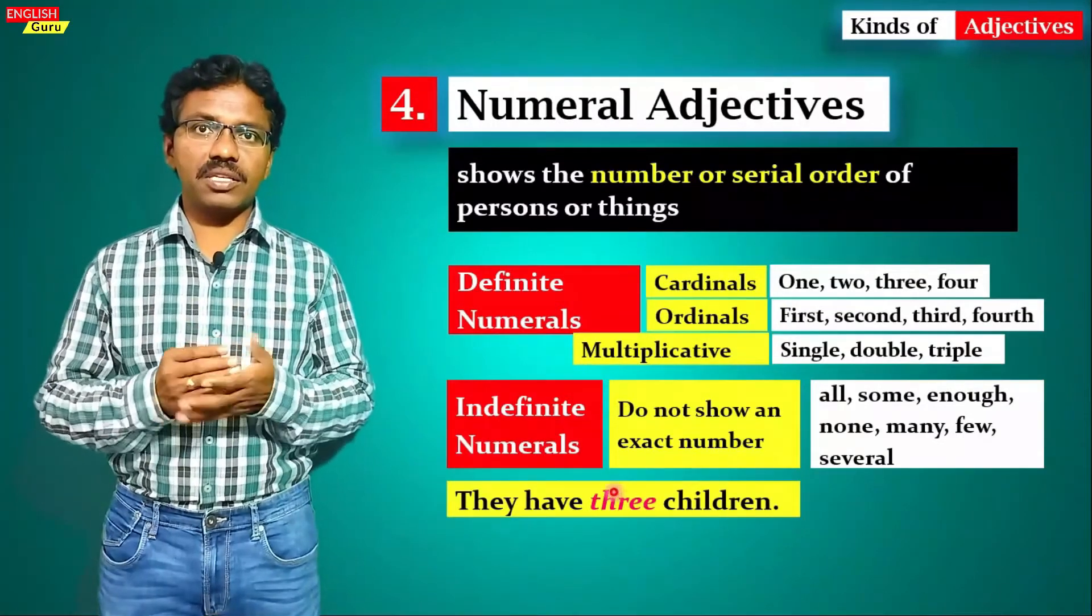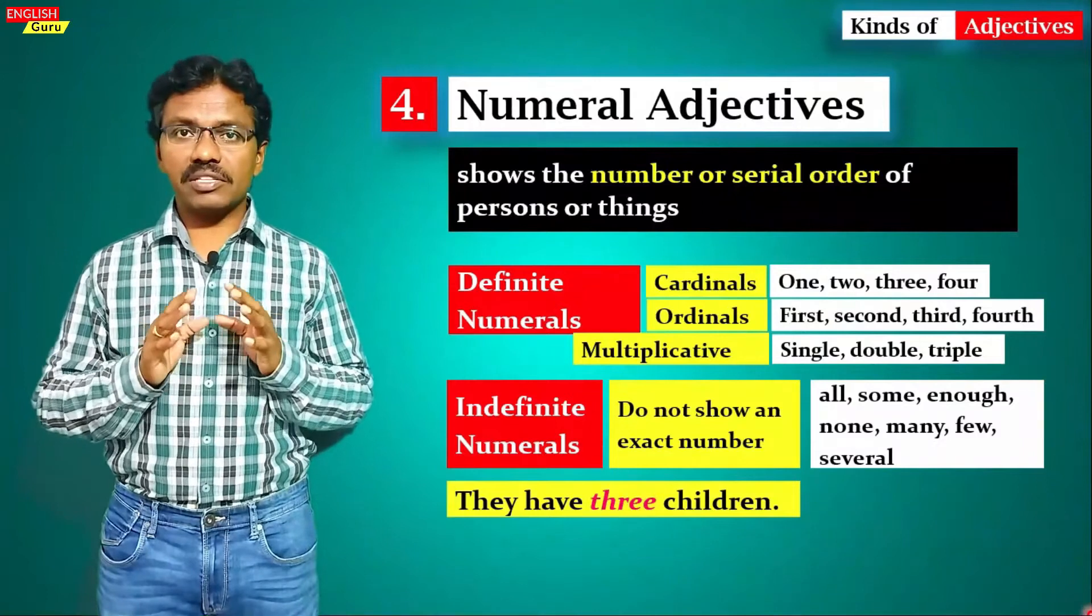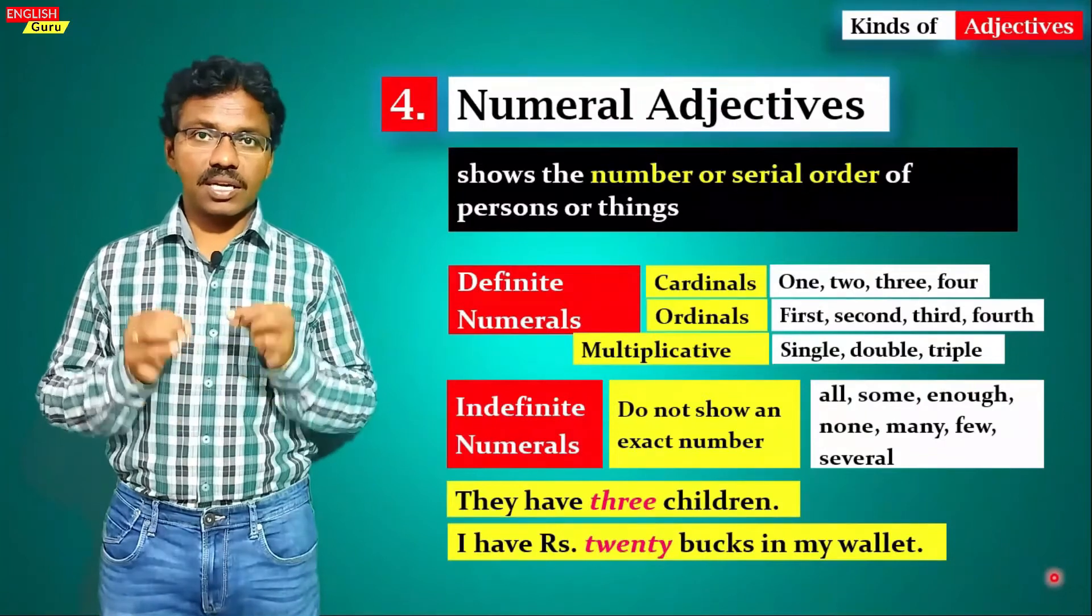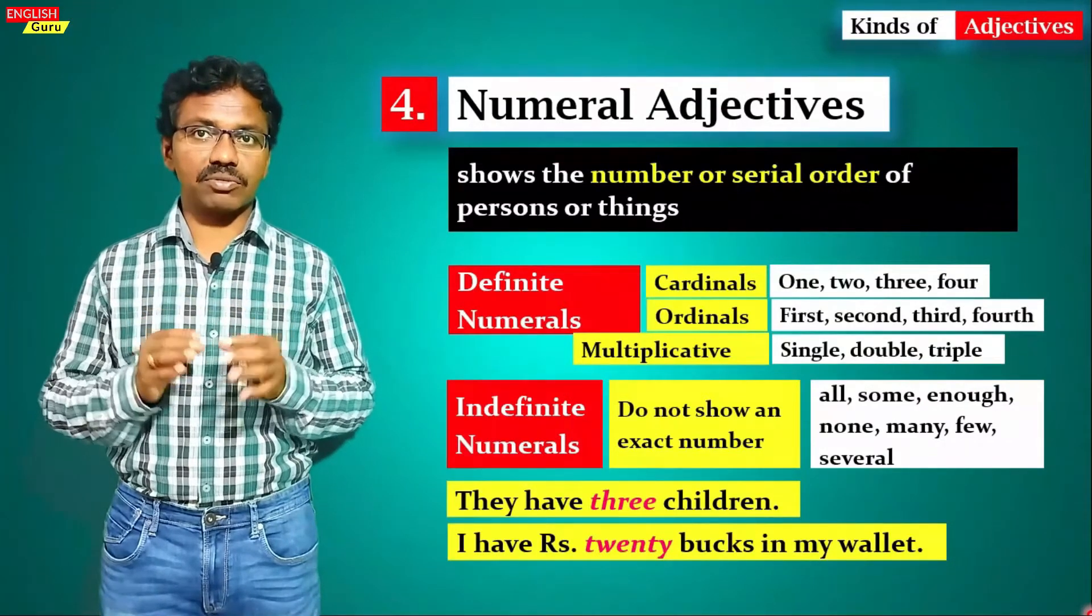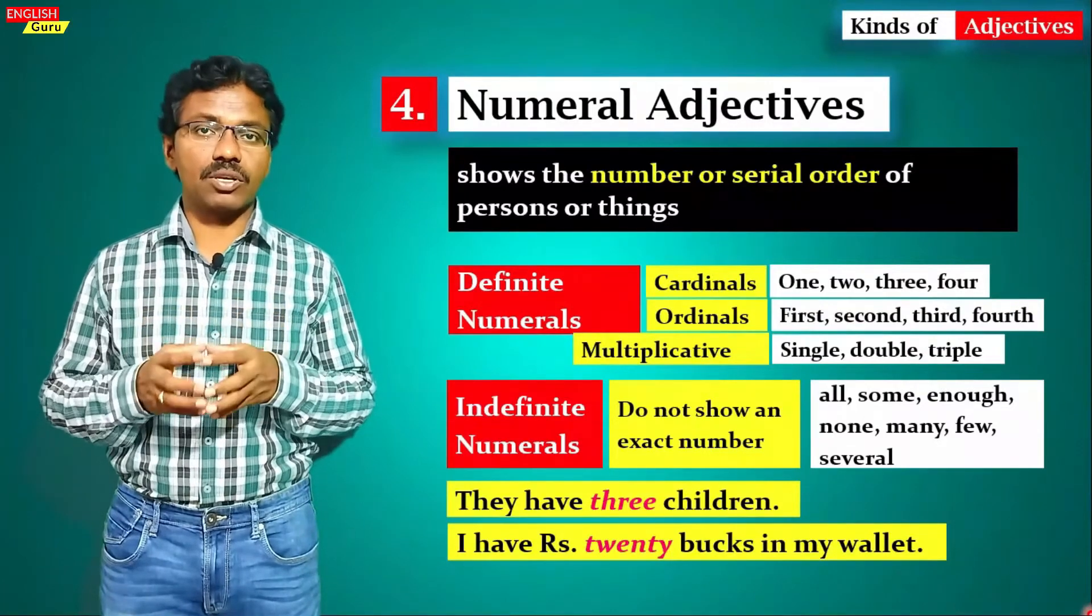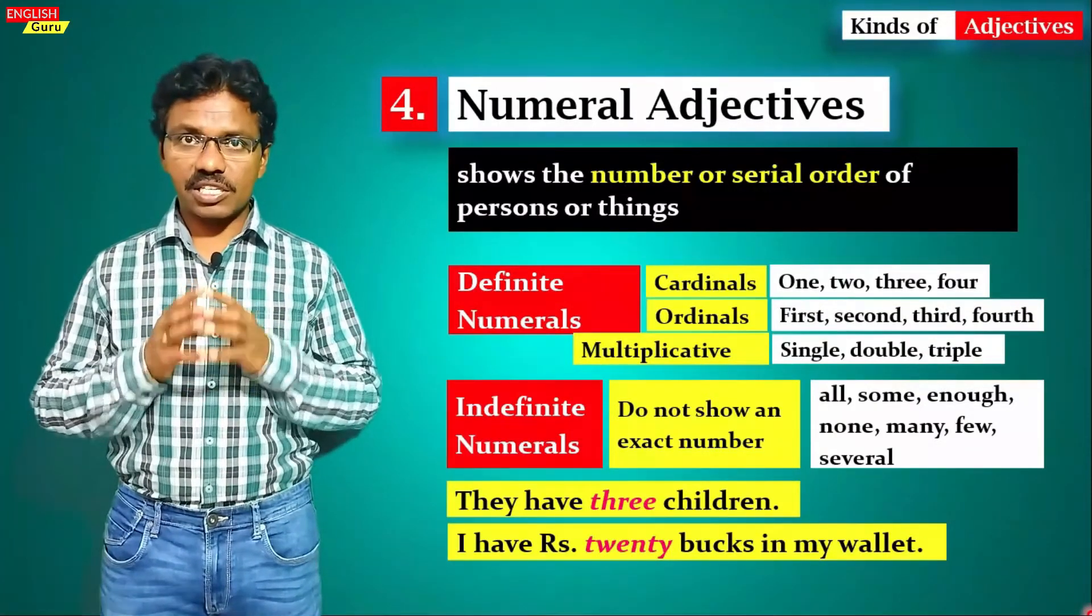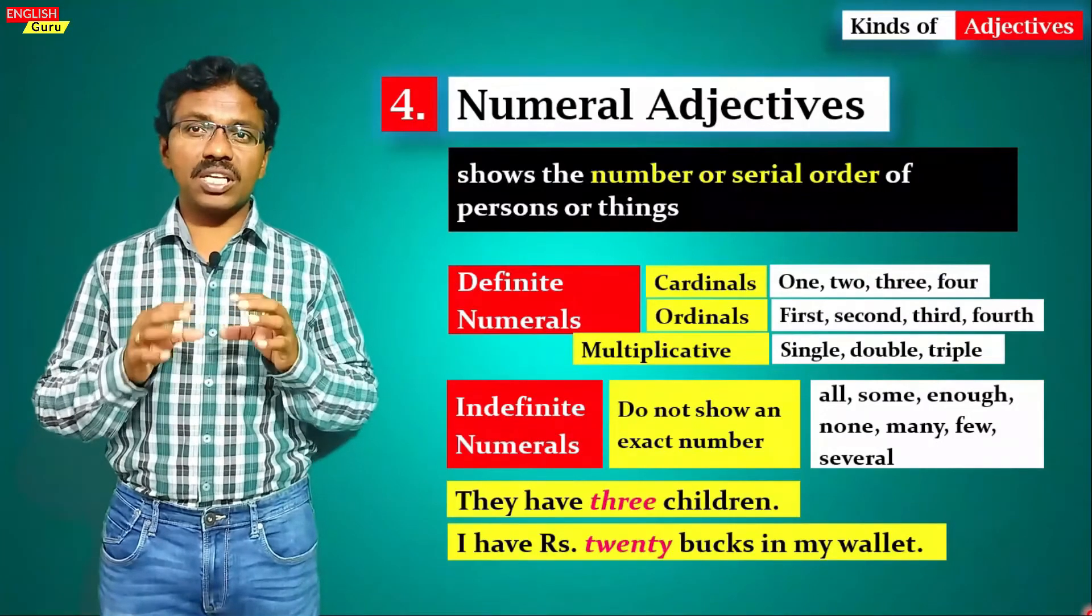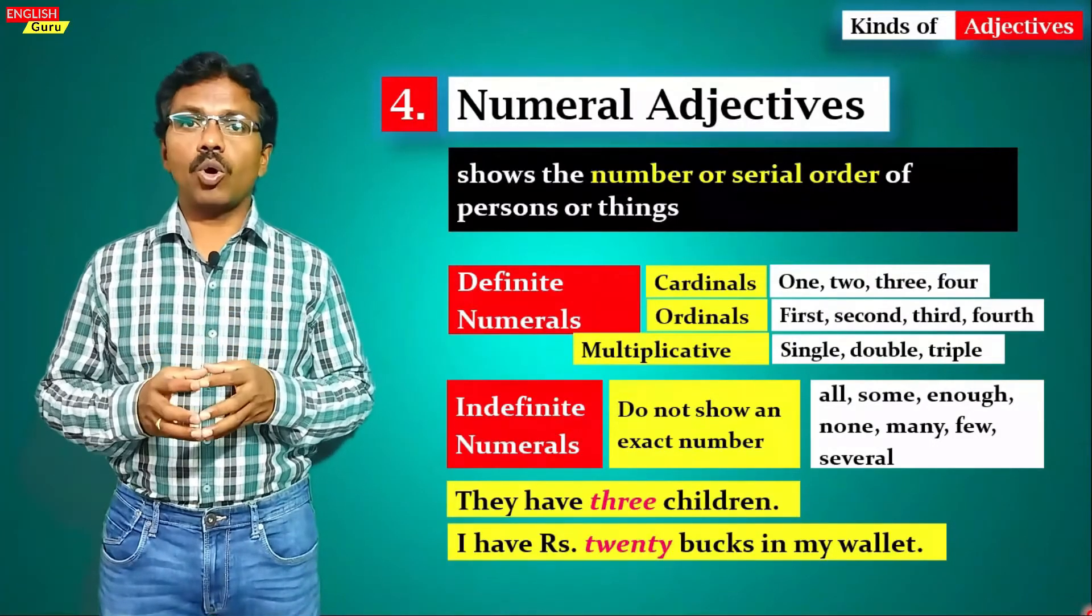Here, three is a definite numeral adjective. I have rupees twenty in my wallet. Twenty is a definite numeral adjective, or definite cardinal numeral adjective to be precise. So numeral adjectives talk about the number or serial order of a person or thing.